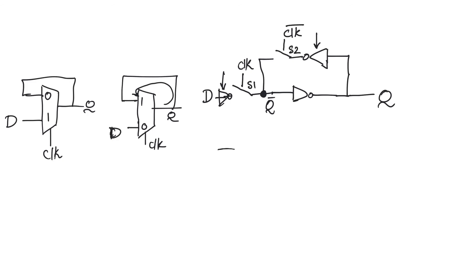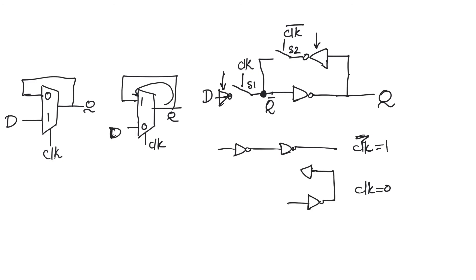Therefore Q is going to be a copy of D when clock is equal to one. When clock is equal to zero, on the other hand, switch S1 will be off and will disconnect D from Q, and the feedback inverter will be connected and we will preserve the old value of Q. Therefore we have two modes: transparent mode when clock is equal to one, and opaque mode when clock is equal to zero.